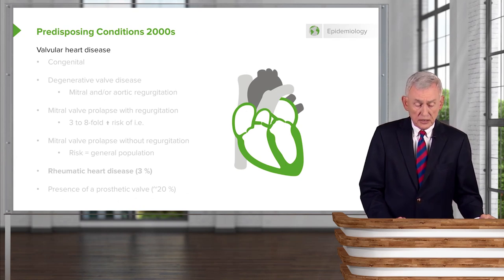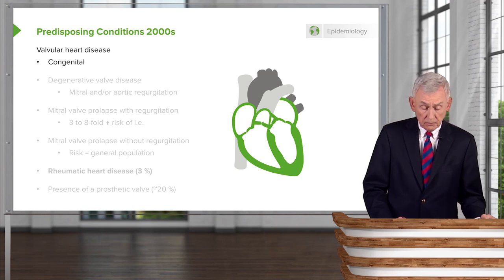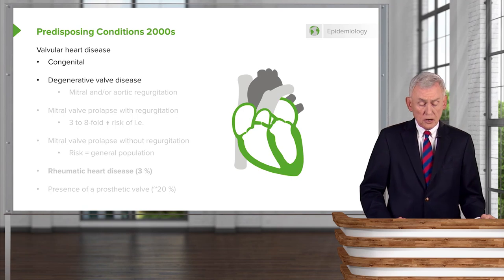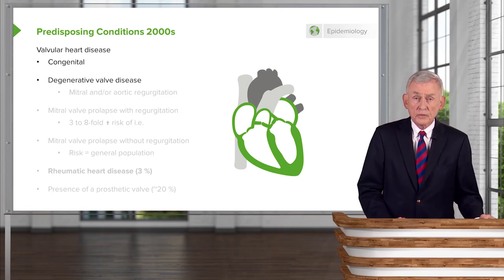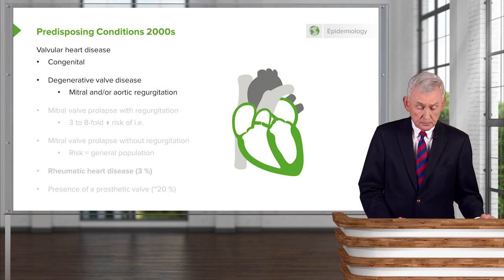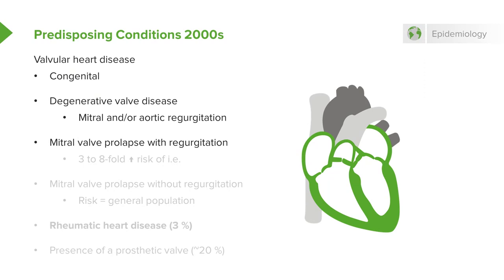The predisposing conditions in the 2000s are still valvular heart disease — congenital — but now instead of rheumatic heart disease, we're talking about degenerative valve disease. People are living longer, long enough for their valves to degenerate, including the mitral and aortic valves. A condition not easily recognized until the era of echocardiography is mitral valve prolapse. Mitral valve prolapse with regurgitation — where the valve not only prolapses into the left atrium but leaks blood — carries a three- to eight-fold increased risk of endocarditis.